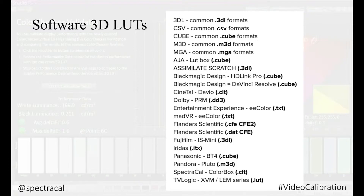Here are the common 3D LUT file types supported by most creative and editing software applications. This list is quite extensive. If a particular 3D LUT file type you need isn't listed, reach out and let us know. It's not hard to add new LUT formats. Since we have generic formats like CSV, you can output a LUT from CalMAN into a CSV file, bring it into another utility, and convert it to whatever you need for your particular use case.